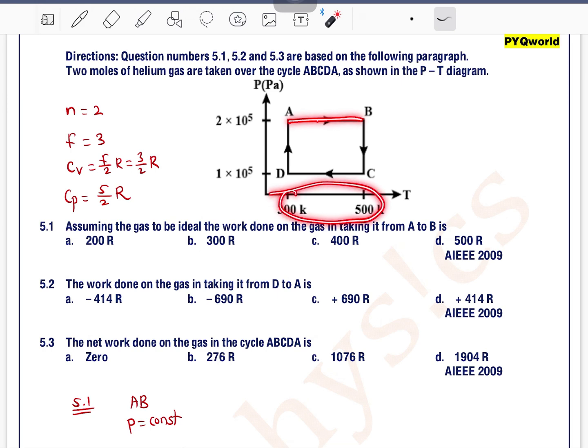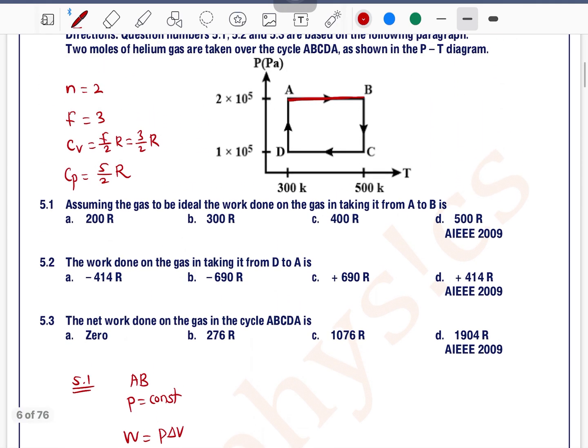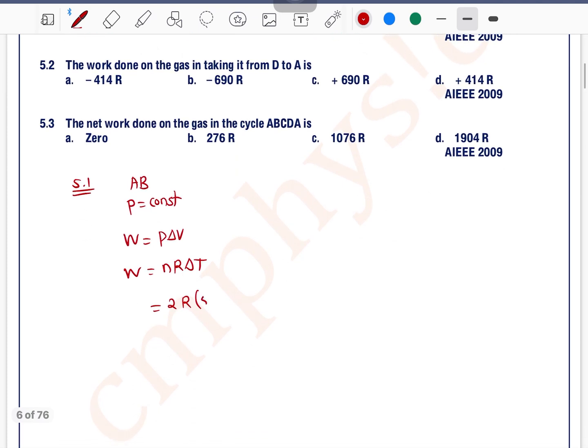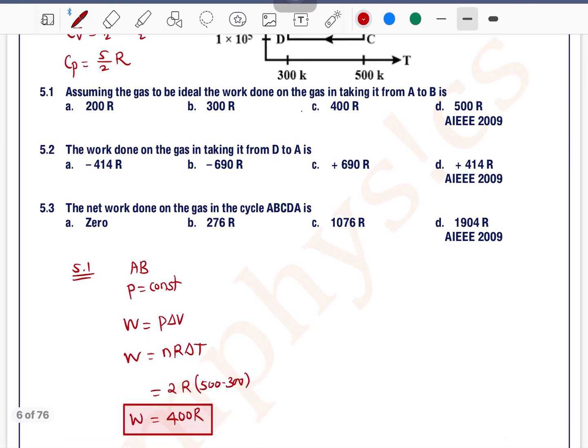that the work can be written as P·ΔV. Because pressure is constant, as you move from point A to point B, temperature is changing, so we must convert this formula in terms of temperature. This can be written as nRΔT from the ideal gas equation. So n=2, R is R, ΔT is 500-300=200. So 2×200=400, work done equals 400R.